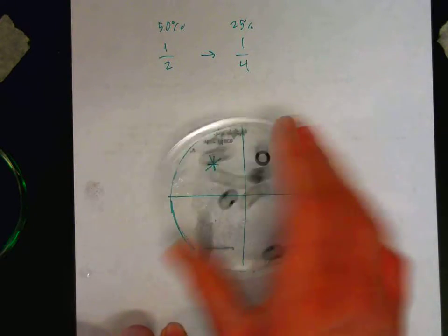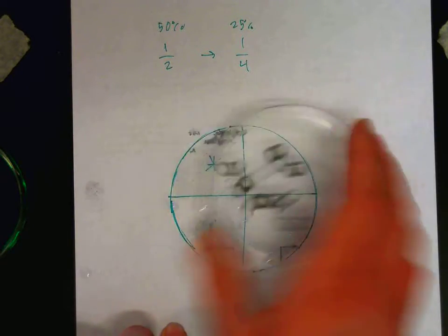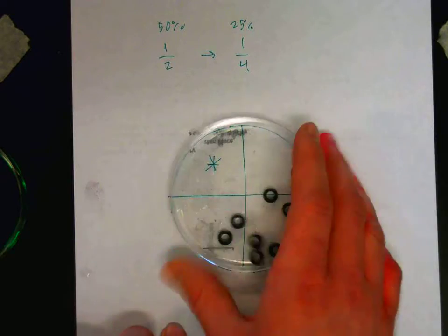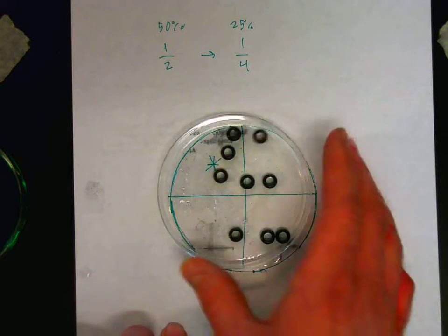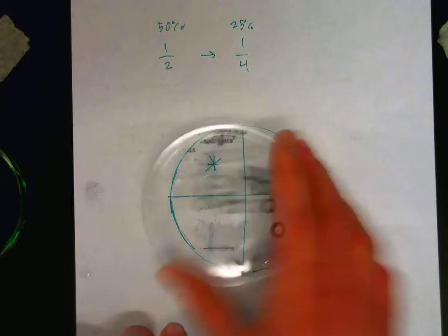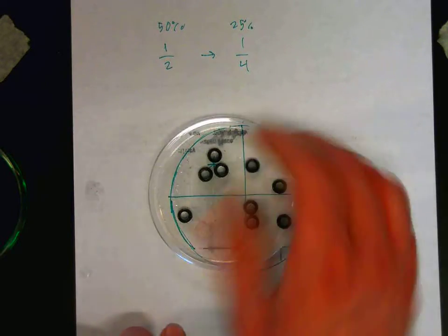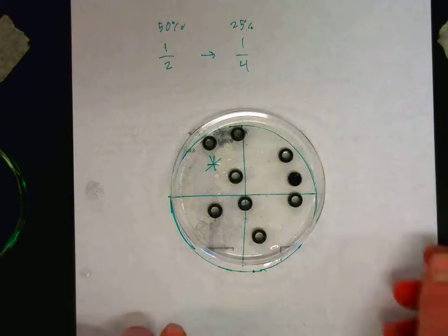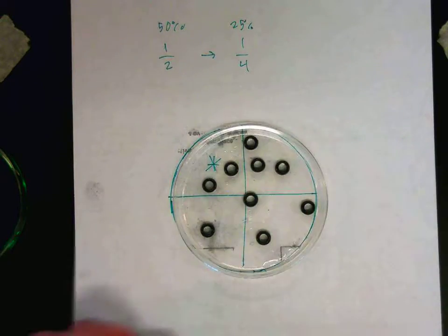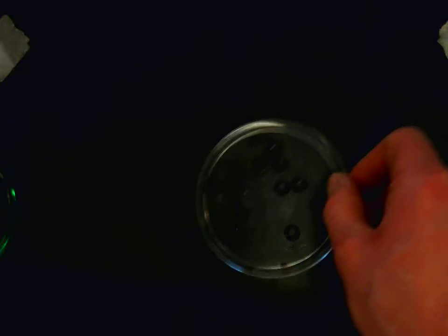So the random motion says that over time they're going to spread out to what is more likely, the more likely arrangement, which is a more even distribution of the particles. So this is what happens with diffusion.